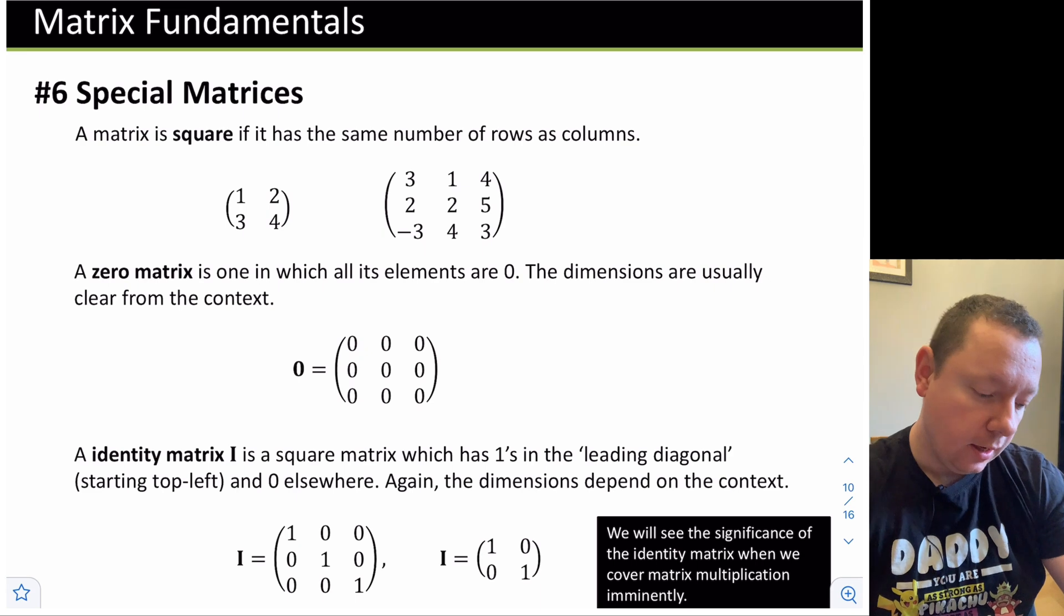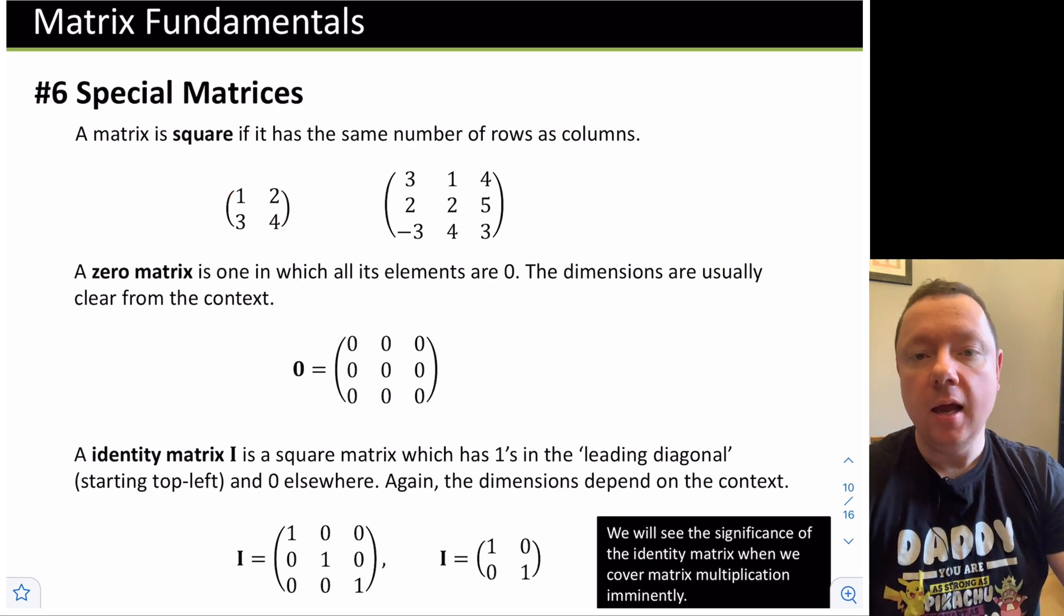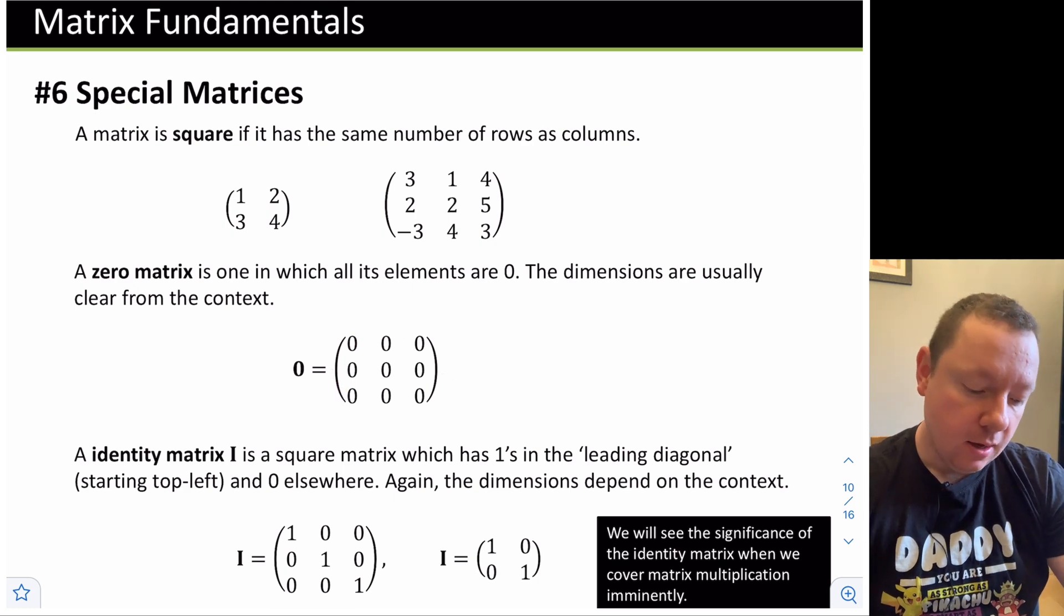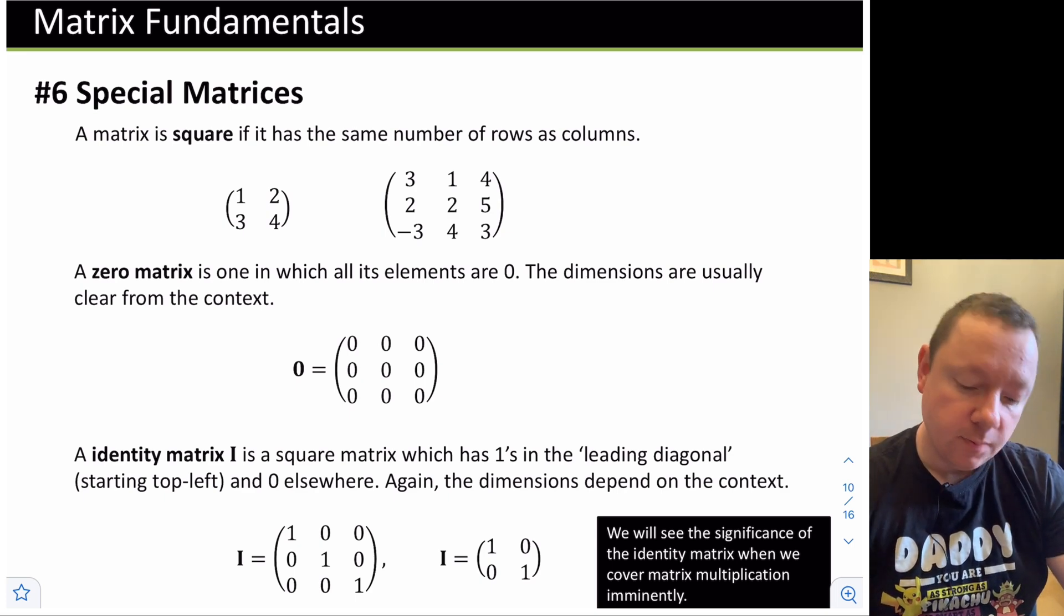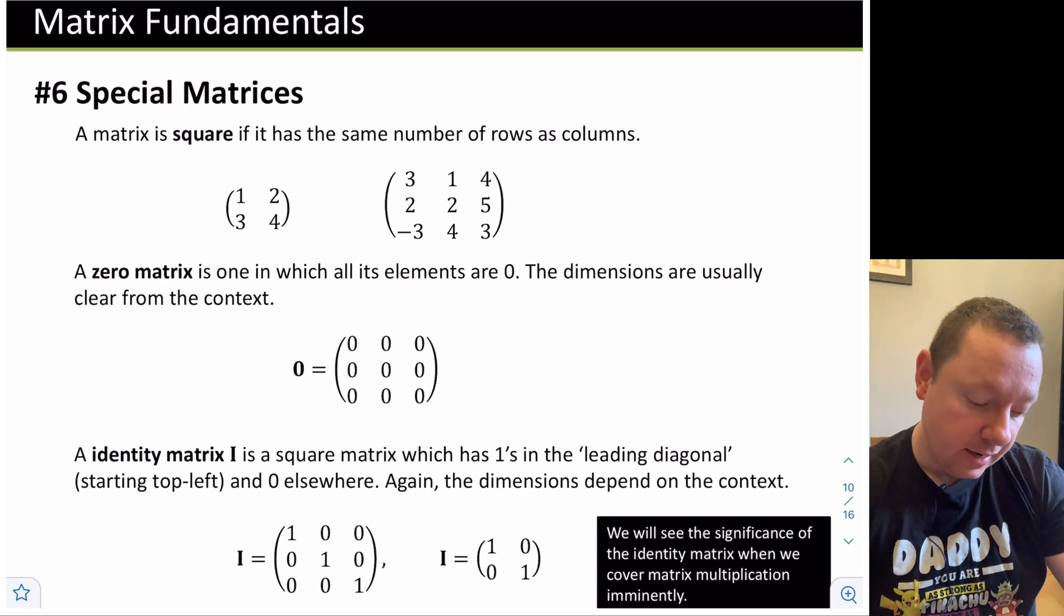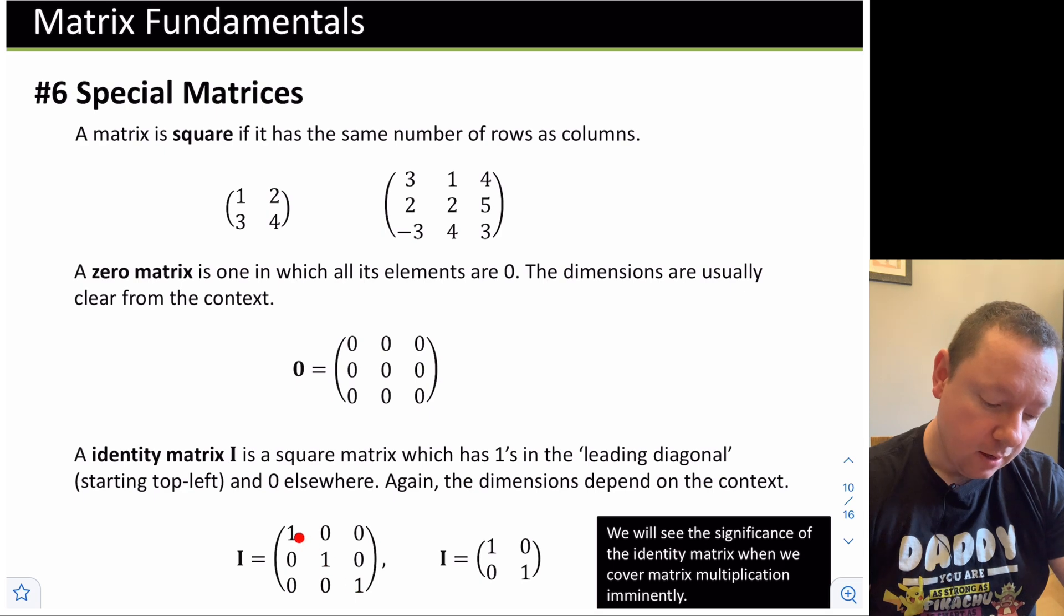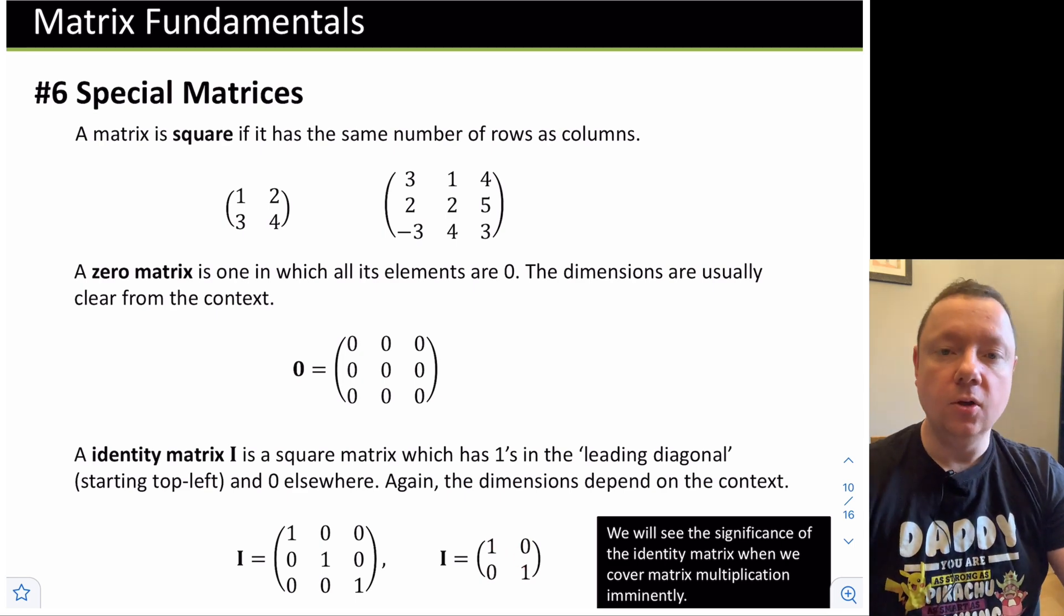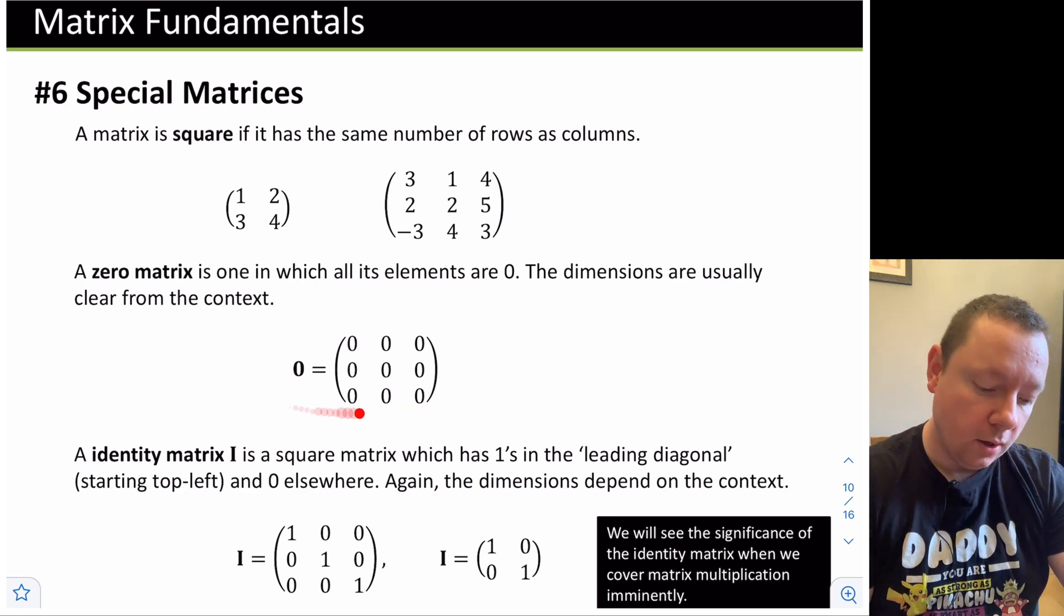Let's look at a few special matrices. A matrix is square if it's got the same number of rows and columns. So a 2 by 2 or a 3 by 3 matrix. If we had all the elements of a matrix being 0, then that's called a 0 matrix. All the elements are 0. And you can have the dimensions that are usually clear from the context. Any size matrix where all the elements are 0 is a 0 matrix. And the last matrix is the identity matrix. This is always a square matrix which has 1s in the leading diagonal and 0 elsewhere. For instance, the 3 by 3 identity matrix, we've got 1s in this diagonal here, where everything else is filled in with 0. The 2 by 2 one is where 1s are here, and everything else is 0.